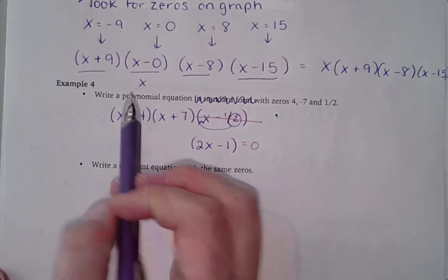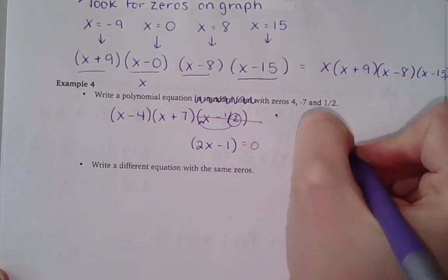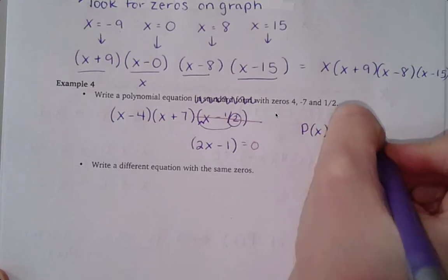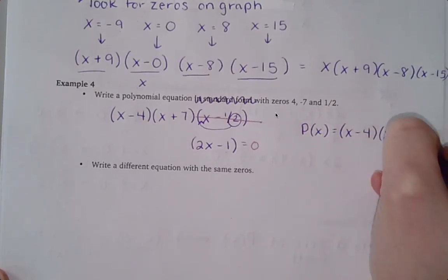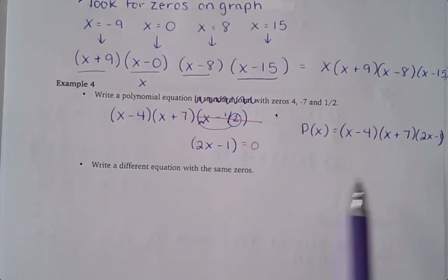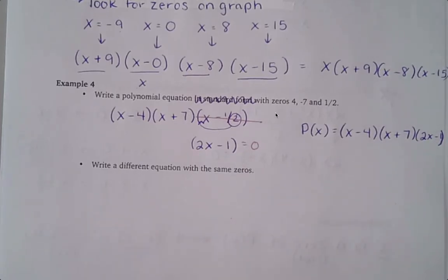So my polynomial equation would just be x minus 4, x plus 7, and 2x minus 1. And that's a polynomial in factored form. Now, if I did want standard form, I would have to multiply these all back together. I'm not going to mess with that right now, but that's what standard form would imply.